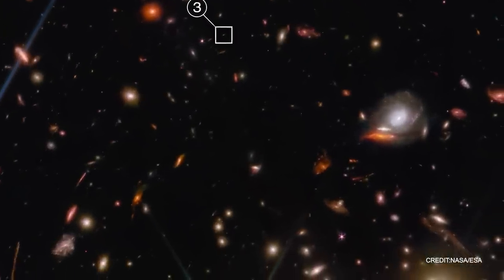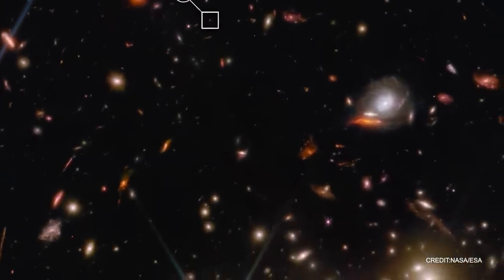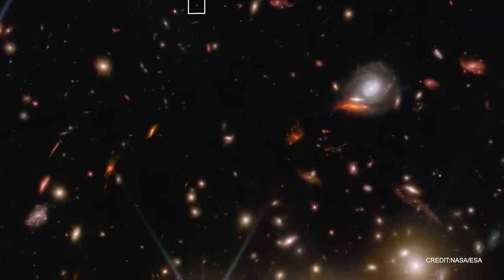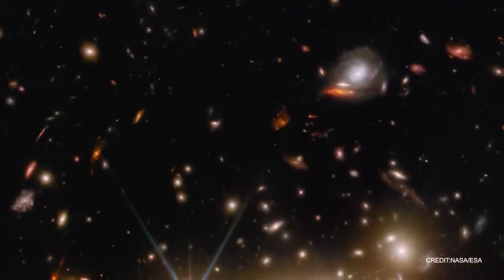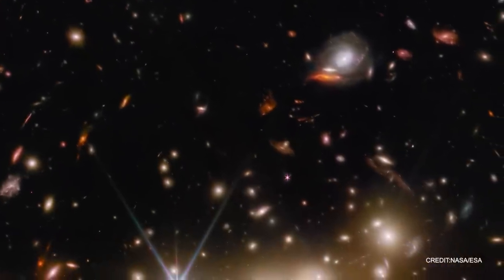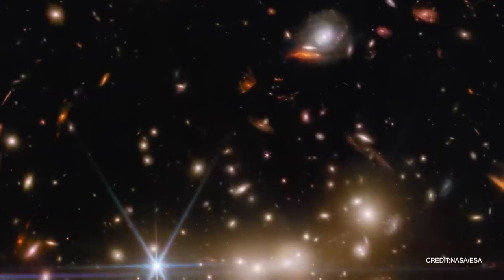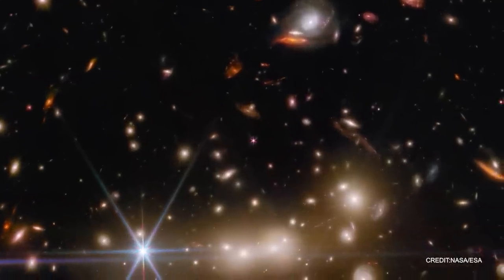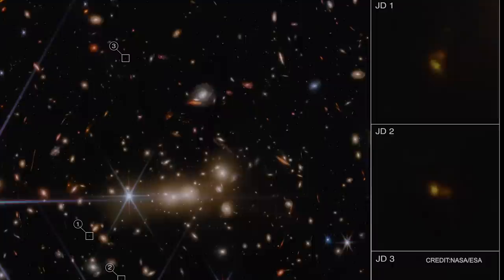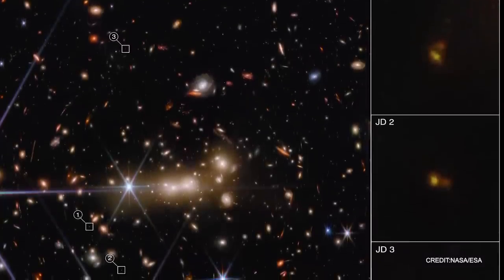But MACS 0647 doesn't stop there. Not only does it magnify the light, but it also triples it, causing the image of the JD system to appear not once, not twice, but three separate times. Imagine looking at a mirror that reflects not just one, but three images of the same object.